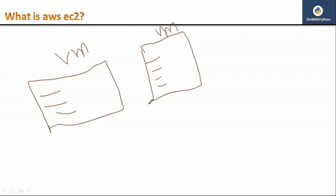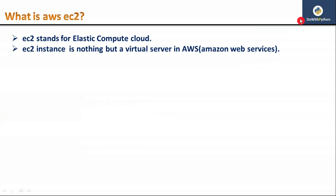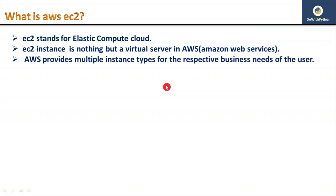Instead of installing VMware on localhost and creating an RHEL server, OpenSUSE server, AIX server, or Solaris on top of it, that service is also provided by AWS. EC2 stands for Elastic Compute Cloud. It is nothing but a virtual server in AWS, and AWS is nothing but Amazon Web Services. We can access that service through a web browser, through the internet.